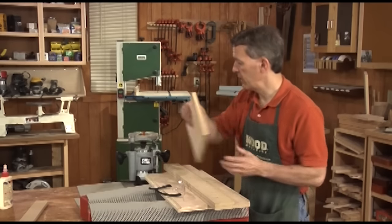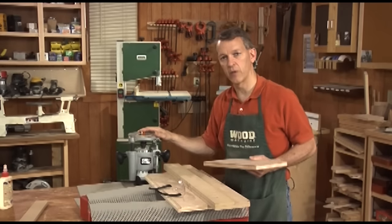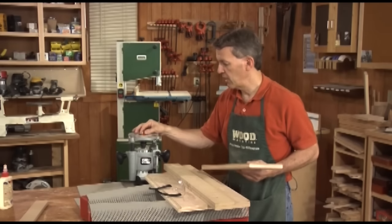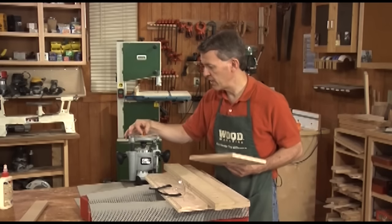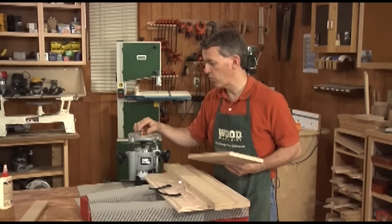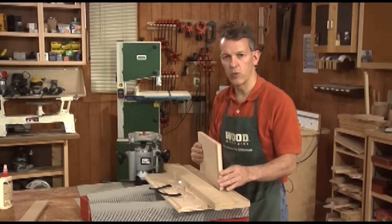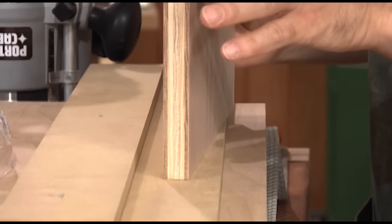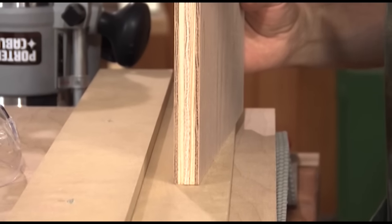One other advantage to using a straight bit to cut a rabbet is that you can cut a rabbet that is actually narrower than the bit. Even though this is a three quarter inch bit, I'm going to cut a rabbet that fits three quarter inch plywood. It's called three quarter inch plywood, but it's always just a skosh under.